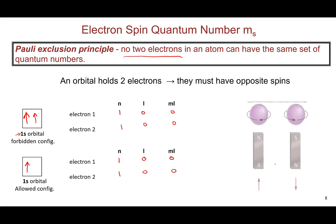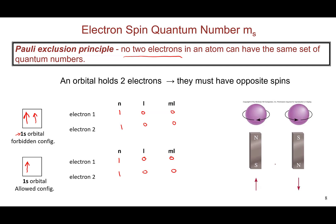That new quantum number is the spin quantum number, ms, which describes the direction of the electron's magnetic spin. When the electron spins counterclockwise, it has a spin-up magnetic moment; when it spins clockwise, it has a spin-down moment. The spin quantum number ms has two values: +1/2 and −1/2. One electron gets ms = +1/2 (spin up) and the other must have ms = −1/2 (spin down). Putting both electrons spin-up would violate the exclusion principle.